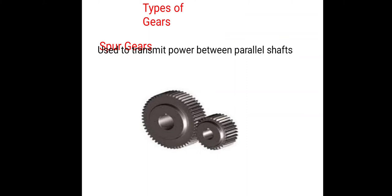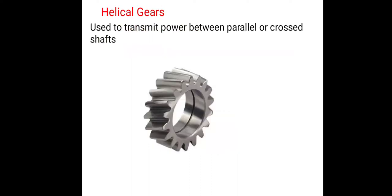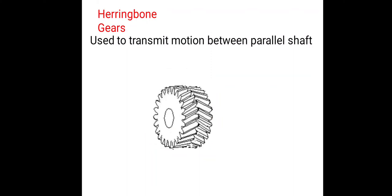Types of gears: Spur gears are used to transmit power between parallel shafts. Helical gears are used to transmit power between parallel or cross shafts. Herringbone gears are used to transmit motion between parallel shafts.